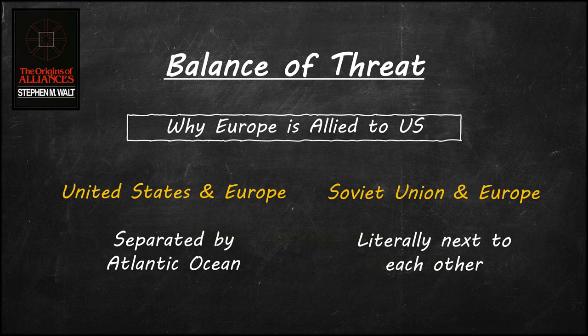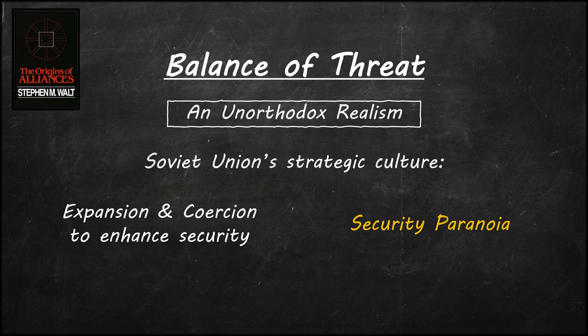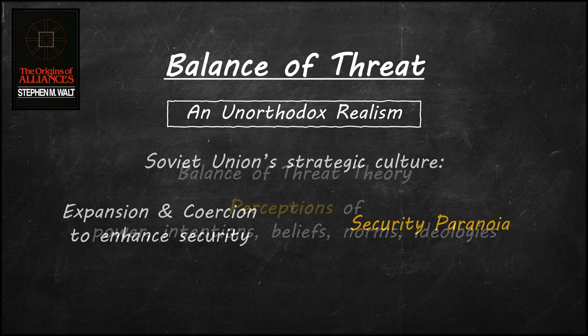Walt claims that the United States was perceived to be more threatening to Third World Countries, while the Soviet Union was perceived to be more threatening to Europeans. Furthermore, the United States and Europe are separated by the Atlantic Ocean, while the Soviet Union is stretched across the Eurasian landmass and located right next to Europe. While the Soviets did not have to respond to its rather poor geographical location, it relied on its long history of expansionism and paranoia, and falsely believed that Europeans would bandwagon instead of balancing against threats.